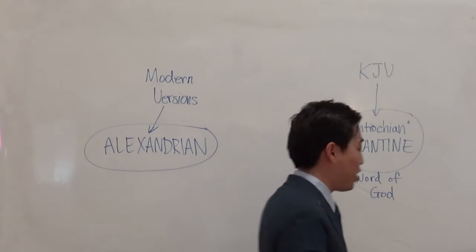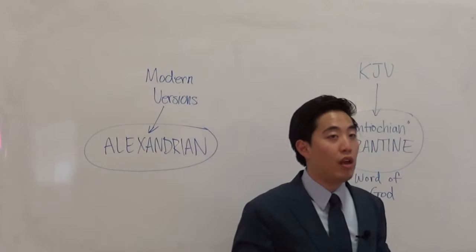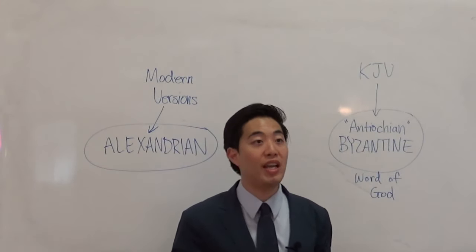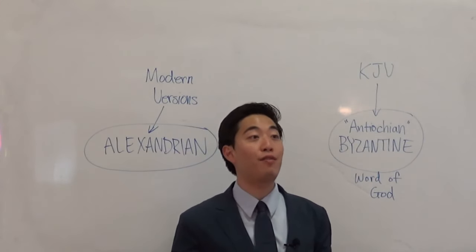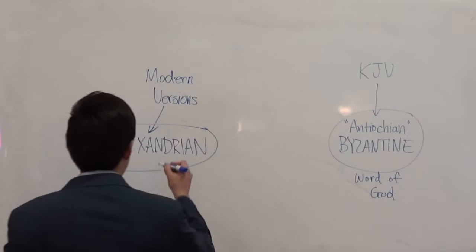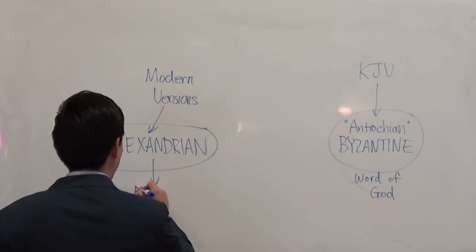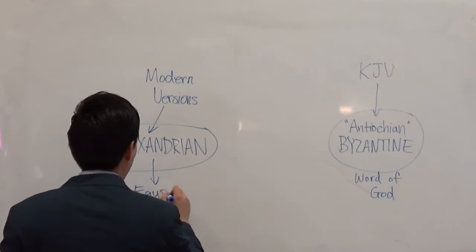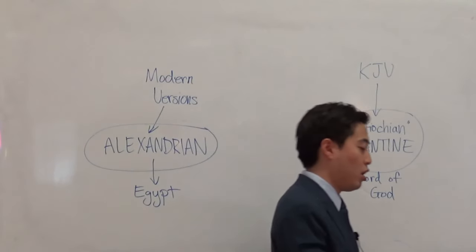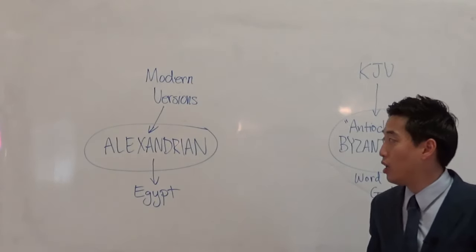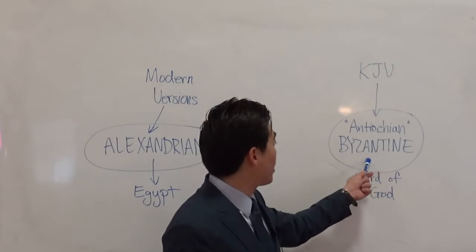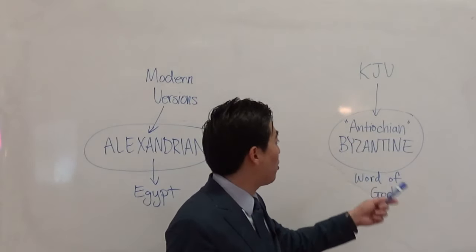What about Alexandria? If you look up every verse in the Bible that talks about Alexandria, it is a negative reference. Alexandria is a city located in Egypt — and what does the Bible say about Egypt? Nothing good. So that's why we believe if you want the right Bible, you go to Antioch, not Alexandria.